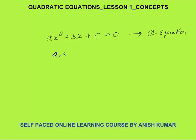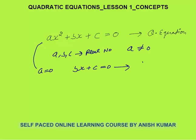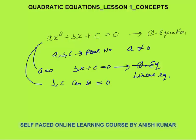Where a, b, and c are real numbers, but the condition is that a should not be equal to zero. Why so? Because if a is zero, the equation will become bx + c = 0, and this is not a quadratic equation — this is a linear equation. So a should not be equal to zero, but b and c can be equal to zero.